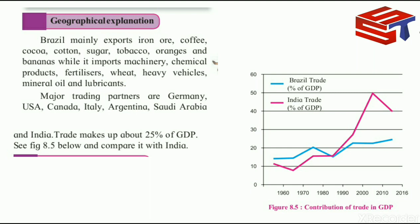Brazil mainly exports iron ore, coffee, coke, cotton, sugar, tobacco, oranges, and bananas, while it imports machinery, chemical products, fertilizers, wheat, heavy vehicles, mineral oil, and lubricants. Brazil's major trading partners are Germany, USA, Canada, Italy, Argentina, Saudi Arabia, and India.